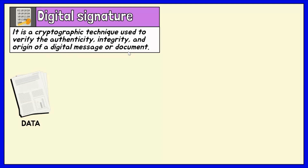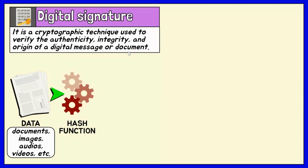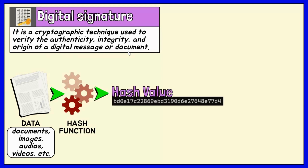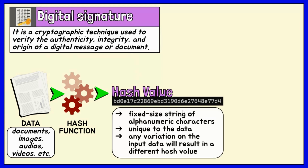The signer feeds the data of any size and type to the hash function and generates the hash data or hash value, which is a fixed-sized string of alphanumeric characters. The value of this hash is unique to the data — there is no chance of generating two identical fingerprints. This would happen only if the input documents or files are identical. Any variation on the input document or file will result in a totally different hash value.